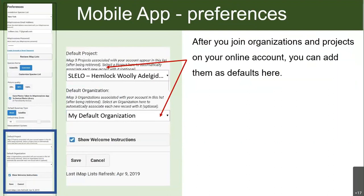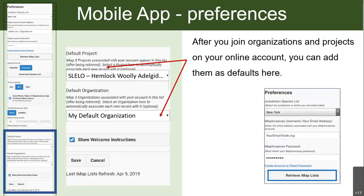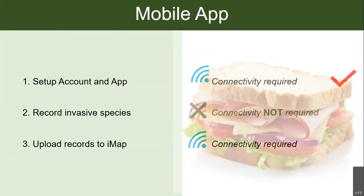After you join an organization or project, you can select those as defaults in preferences here. If you click on the project section and your newly joined project isn't showing up, it's probably because you haven't been accepted yet. In a few days when you've been accepted, come back into preferences and hit 'retrieve IMAP list' again to refresh your account. Once you set default projects, you won't have to select them every time you record an observation. Always remember to save your changes.